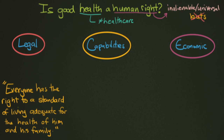We're going to break this up into three perspectives: a legal perspective — sort of an international legal perspective — a capabilities perspective, and then an economic perspective on this question. We'll start with the human rights one because it's one of the older ones, at least in terms of these three.